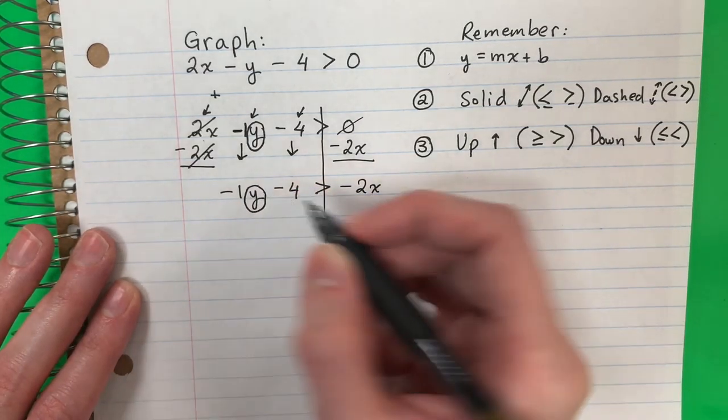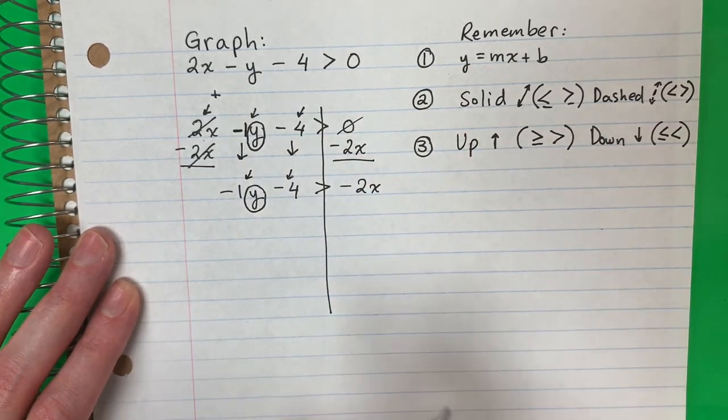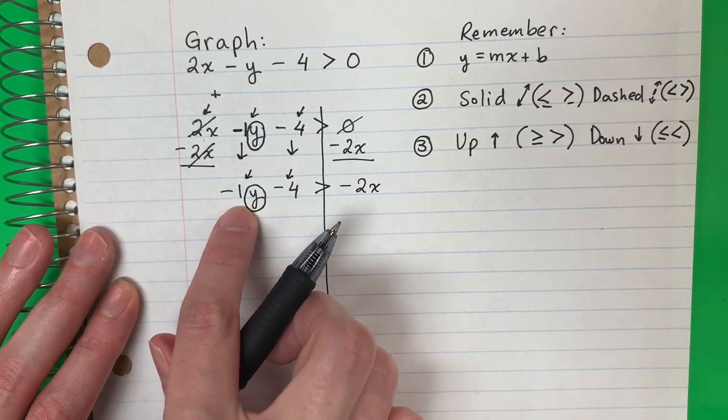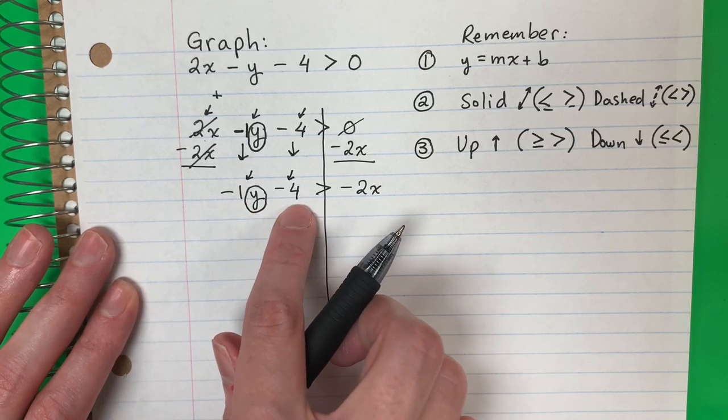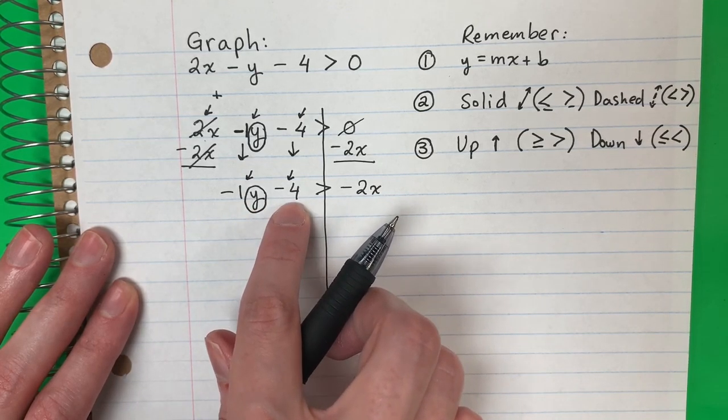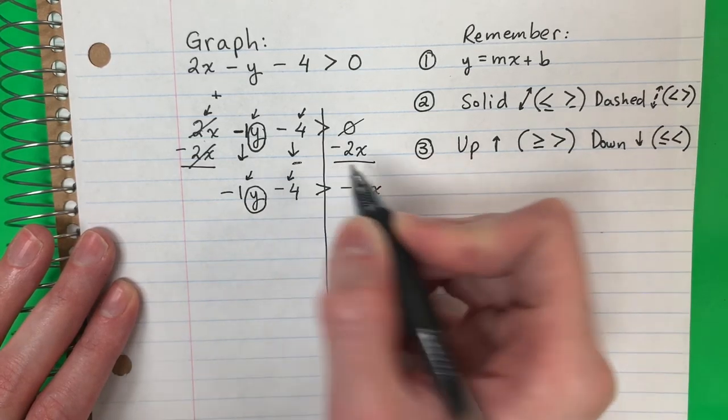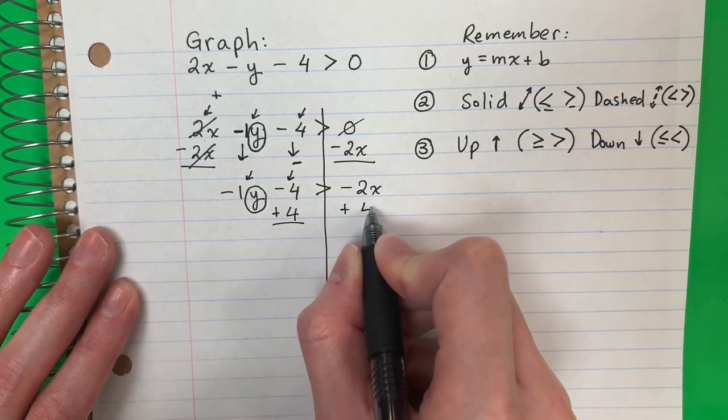I want y alone. Quiero la y sola. I have two things with y. Tengo dos cosas con y. Remember, I will not move the number with y until the end. Recuerda que no voy a mover el número con y hasta el fin. So I have to move the number here. Necesito mover este número. So this is minus 4. The opposite is positive. So plus 4. Copy plus 4.